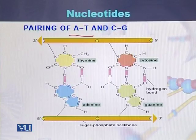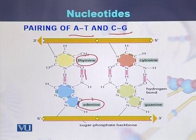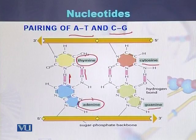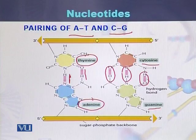In this diagram we can see the pairing between adenine and thymine, as well as between cytosine and guanine. There is a double bond between thymine and adenine — bond number one and bond number two. On the other hand, there are three bonds between cytosine and guanine: bond number one, bond number two, and bond number three. So in the case of adenine and thymine there are two hydrogen bonds, while in the case of cytosine and guanine there are three hydrogen bonds.